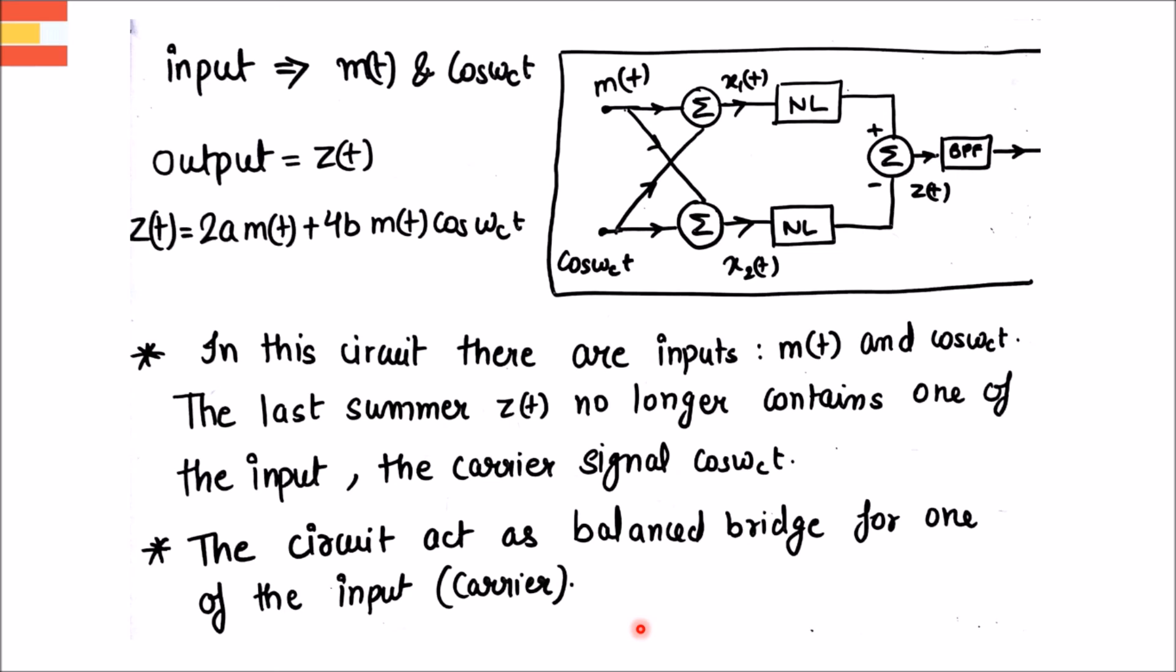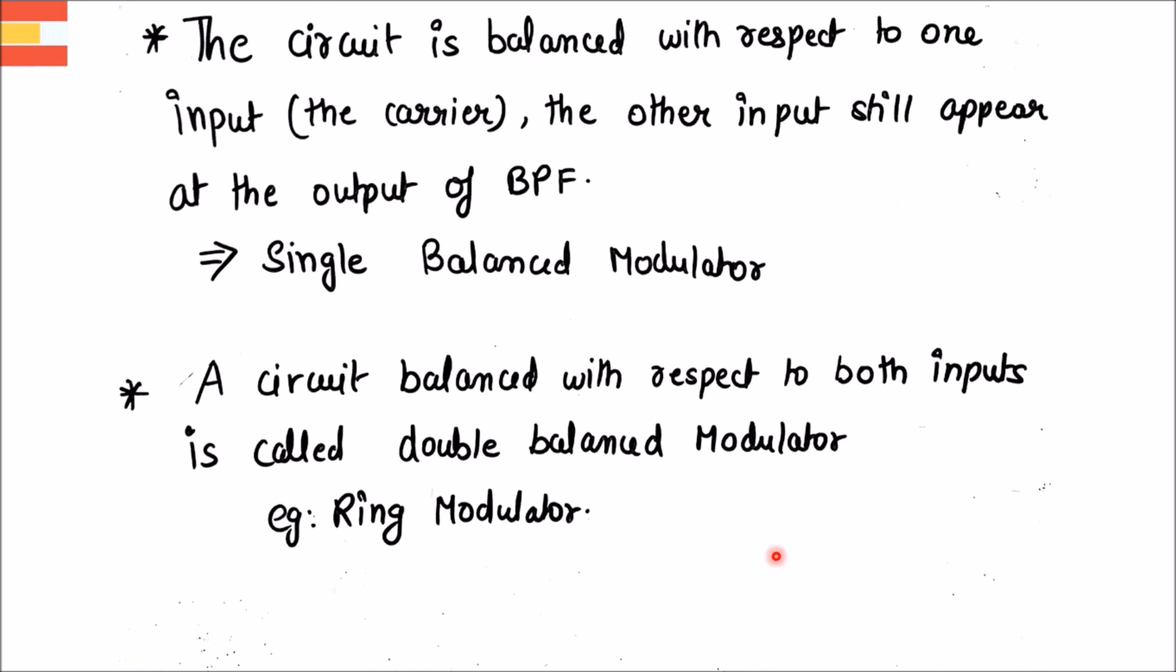Let's discuss the type of balanced modulator. The circuit is balanced with respect to one input that is the carrier. The other input still appears at the output, that is m(t). So it is called single balanced modulator. If a circuit is balanced with respect to both inputs then it is called double balanced modulator whose example is ring modulator.